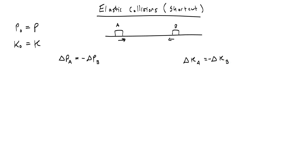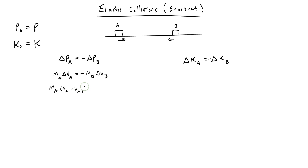Now let's start by looking at the change of momentum. I can write the change of momentum of object A as the mass of A times the change in velocity of A, and on the right side the opposite of the mass of B times the change in velocity of B. I'm going to write that as MA times (VA minus VA naught) equals negative MB times (VB minus VB naught). We're going to set this aside and call it equation 1 and come back to it later.